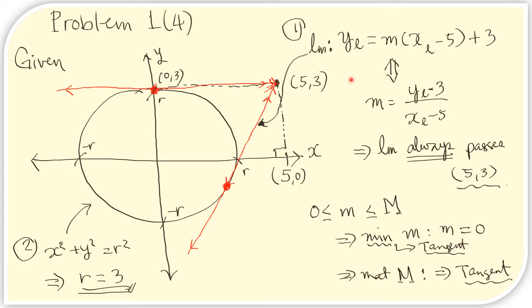Let us first draw the given. We are told that there is this line. If we rearrange the terms, we obtain the point-slope form of a line. This means that the slope of the line is m and that this line goes through the point (5, 3). We draw the point (5, 3) on the xy-plane. Any line that goes through this point will have this equation, so m can be anything as long as it goes through (5, 3).